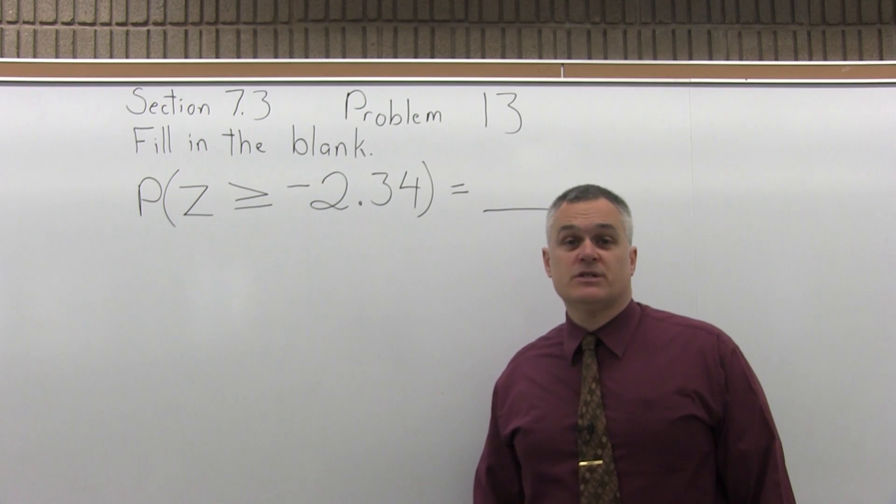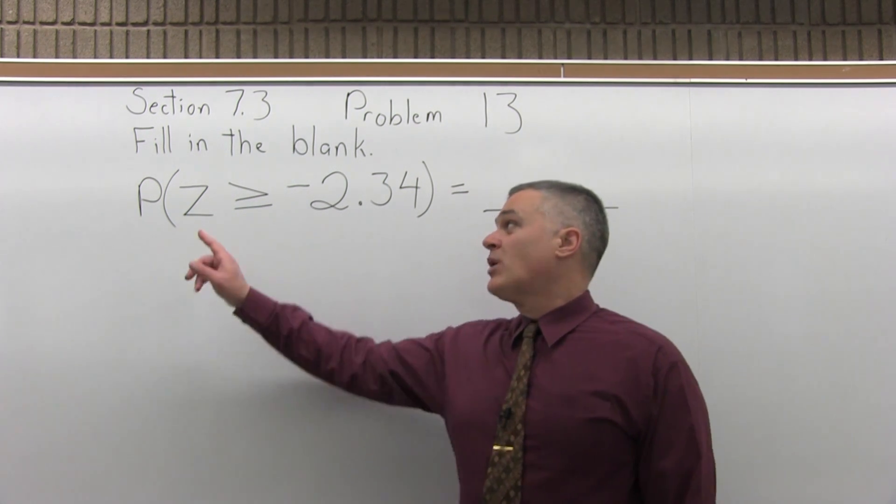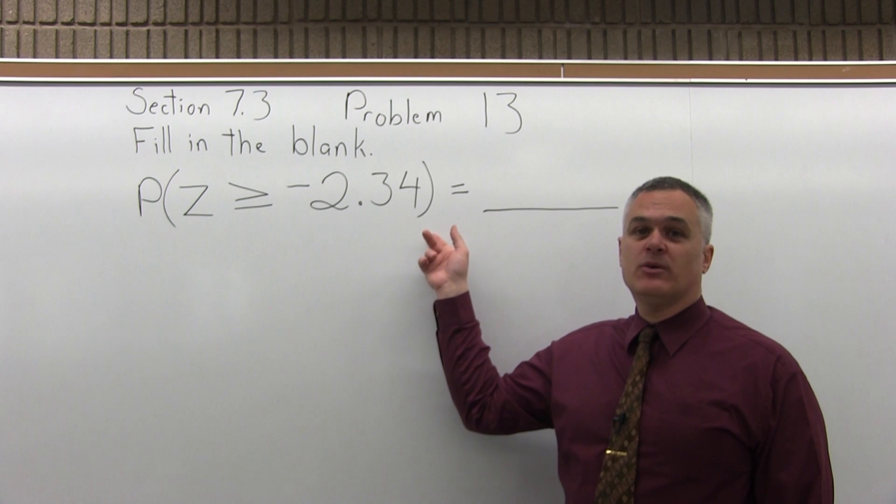This is Section 7.3, Problem number 13. It says fill in the blank: probability that Z is greater than or equal to negative 2.34 equals blank.